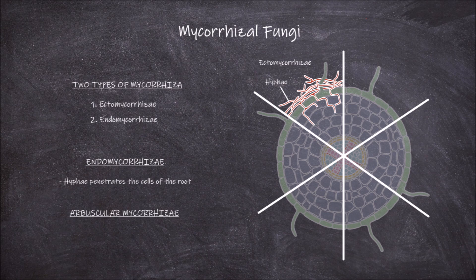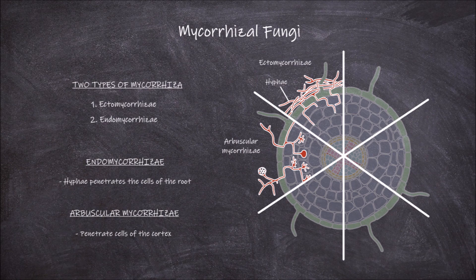Arbuscular mycorrhizae are one form of endomycorrhizae. The hyphae penetrate the cells in the cortex of the root. Within these cells the fungus forms two structures: arbuscules and vesicles.